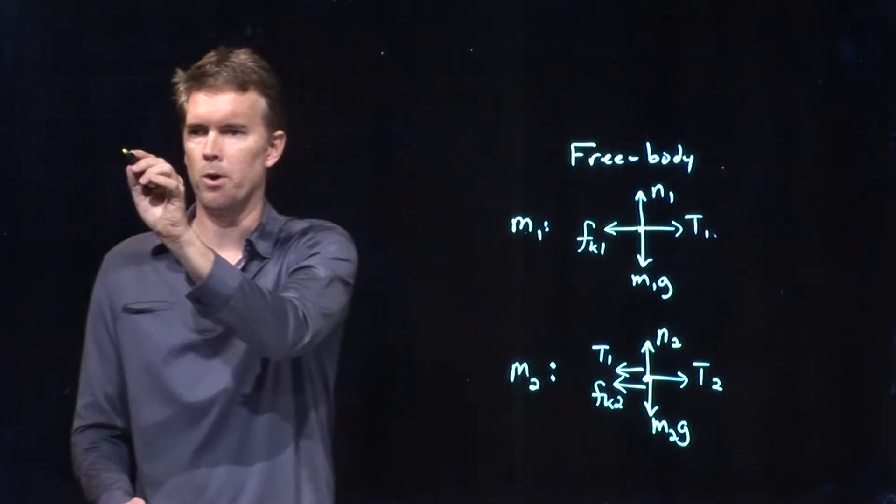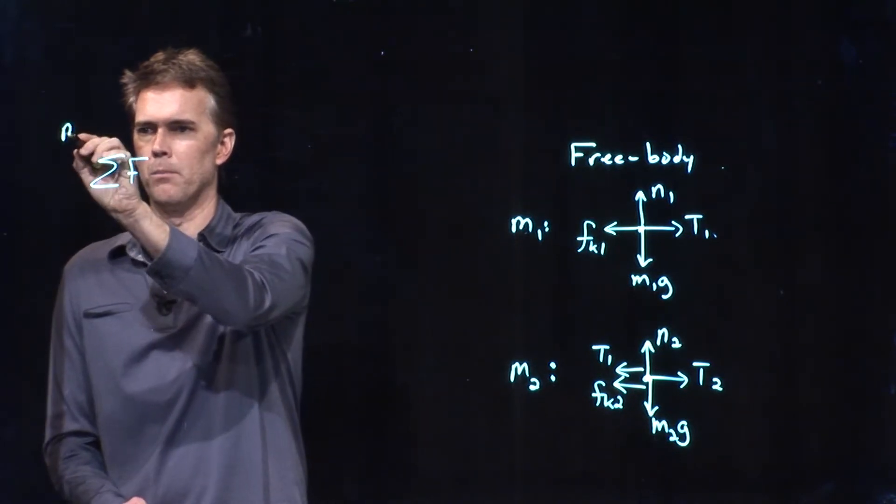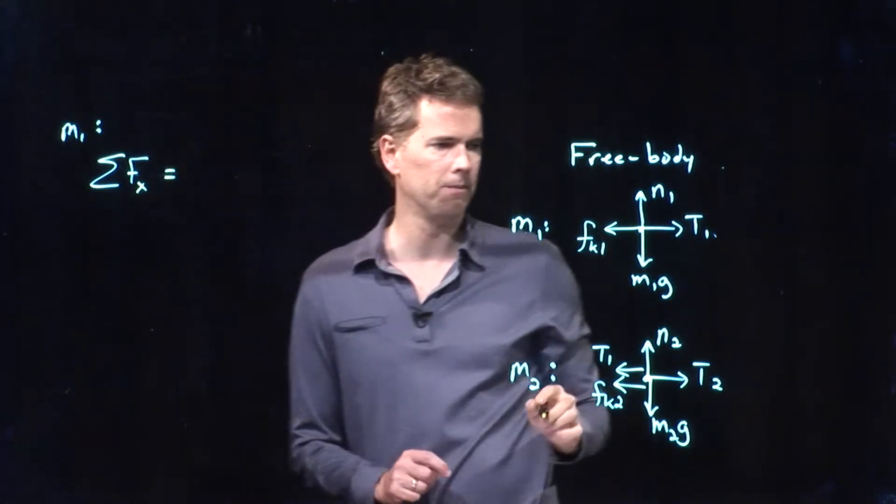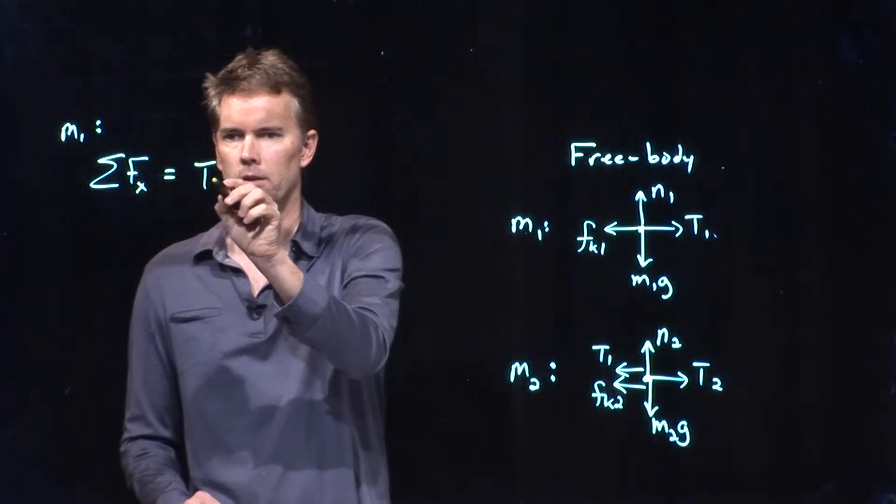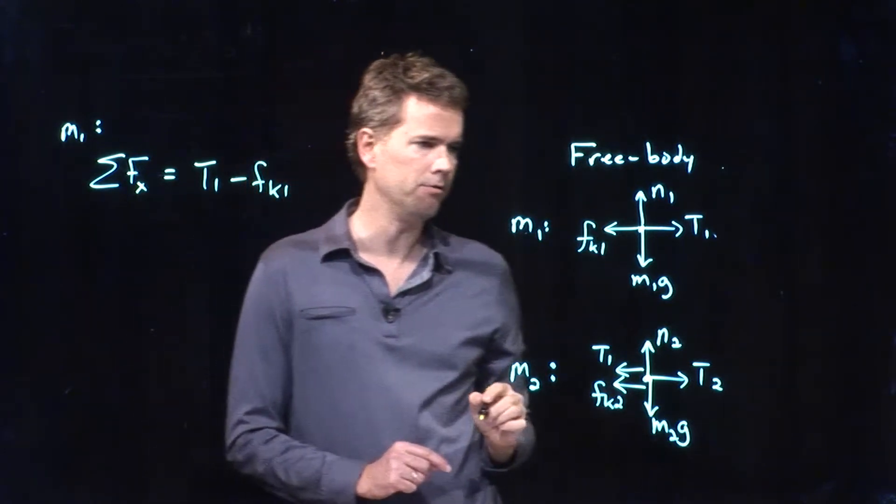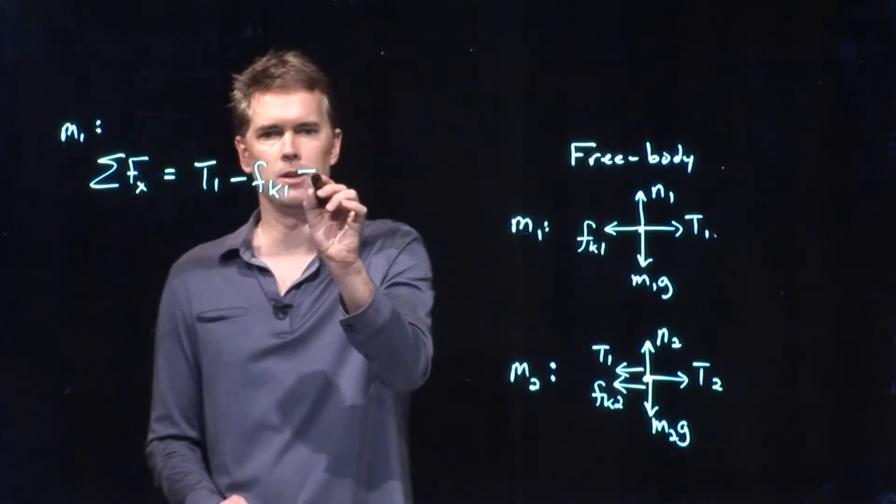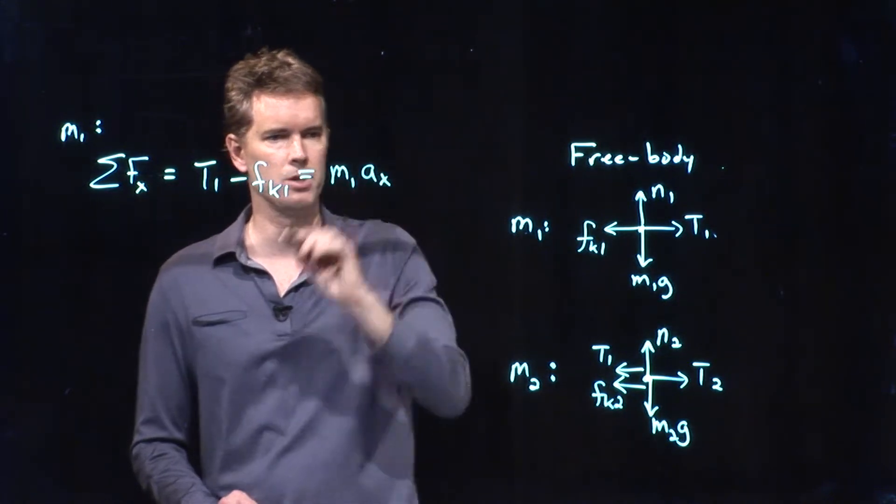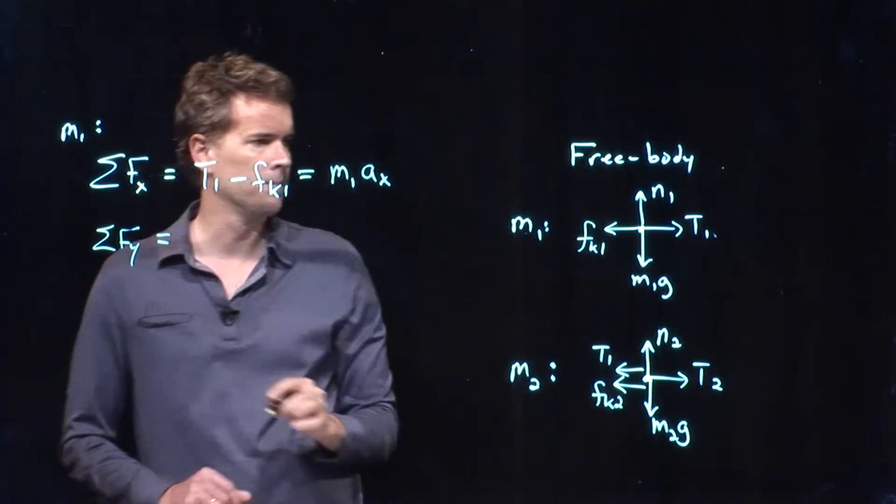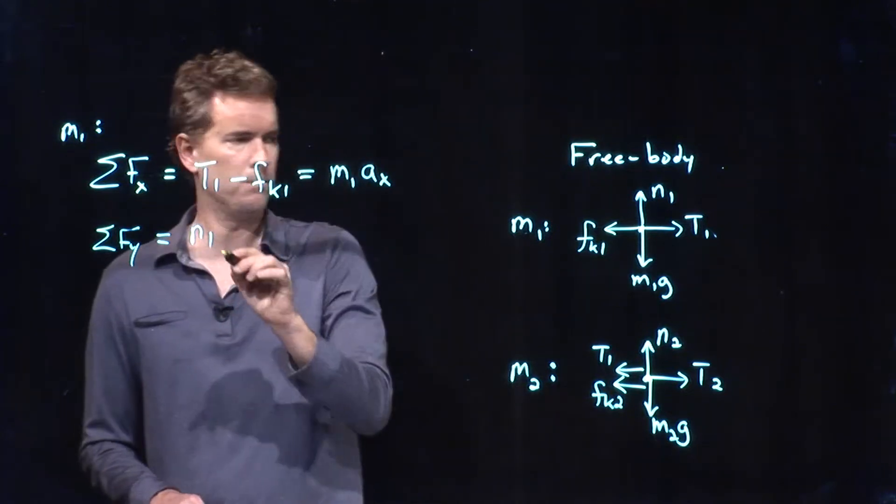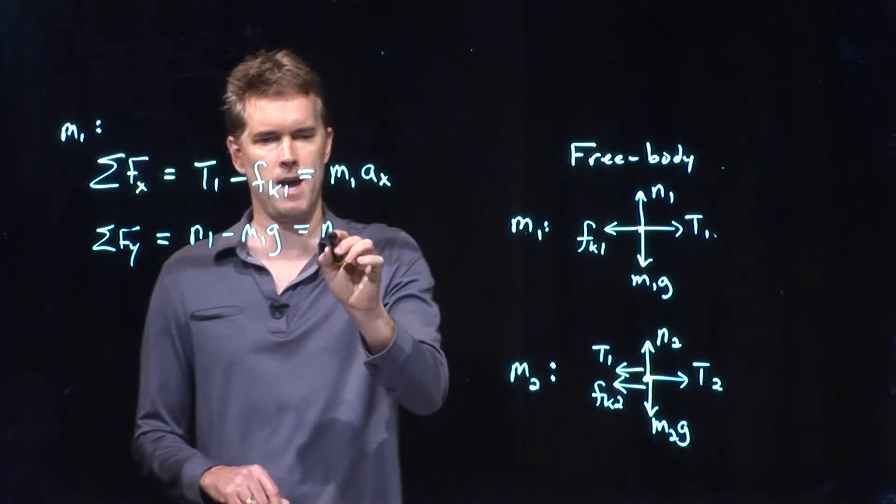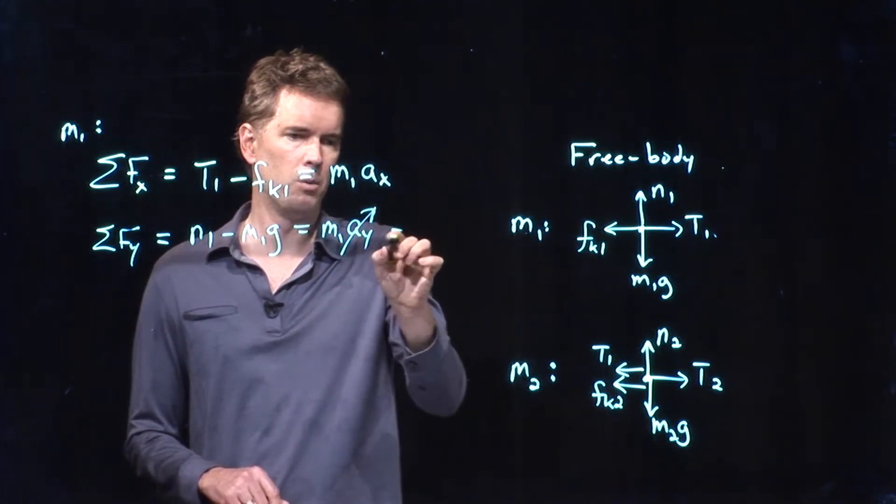So we have our free body diagram. We want to write down the sum of the forces. And we can break it into components. We'll do the x components on mass M1. What do we have? We have T1 going to the right. We have FK1 going to the left. And that's it. That's equal to the mass times the acceleration in the x direction. What about the sum of the y direction? We've got N1 going up. We have M1G going down. That's equal to the mass times the acceleration in the y direction. But we know that's zero.